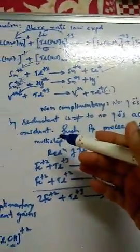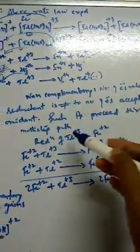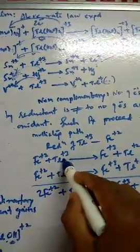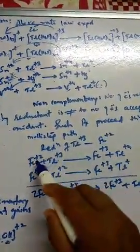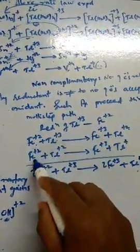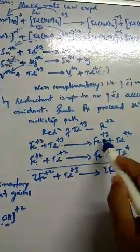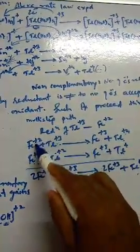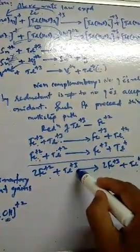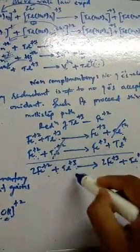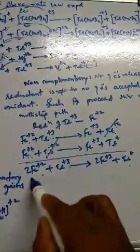The next concept is non-complementary reactions. Here the number of electrons released by the reductant is not equal to the number of electrons accepted by the oxidant — the opposite of complementary. There is no fixed two-electron transfer relationship. Example: Fe²⁺ with Tl³⁺. First step: Fe²⁺ reduces Tl³⁺ to Tl²⁺ and Fe²⁺ is oxidized to Fe³⁺. Second step: another Fe²⁺ reduces Tl²⁺ to Tl⁺, giving Fe³⁺. Overall: 2Fe²⁺ + Tl³⁺ → 2Fe³⁺ + Tl⁺.